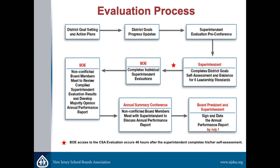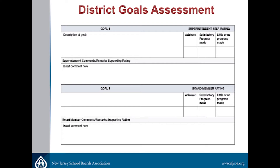Once all individual board members are done — and you'll all be able to see who's completed it and who hasn't — New Jersey School Boards has a system that compiles all your individual responses into one anonymous document. This is a sample of what that document might look like for the goals part: it would show what the goal was, the superintendent's comments and rating, and then the board's ratings. Where you see the asterisk under members' comments, that's how you'll know when a different board member is speaking.